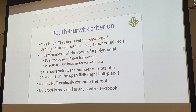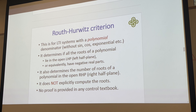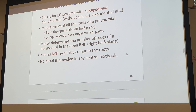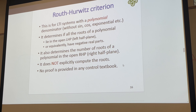There are a few criteria for using the Routh-Hurwitz method: this must be a linear time-invariant system with a polynomial denominator — no sine, cosine, or exponentials in the denominator. It will determine if all roots of the polynomial lie in the open left half plane, or equivalently have negative real parts. It also determines the number of roots in the open right half plane, but does not compute what those roots are. It will be used quickly to manually determine if your system is stable or not.